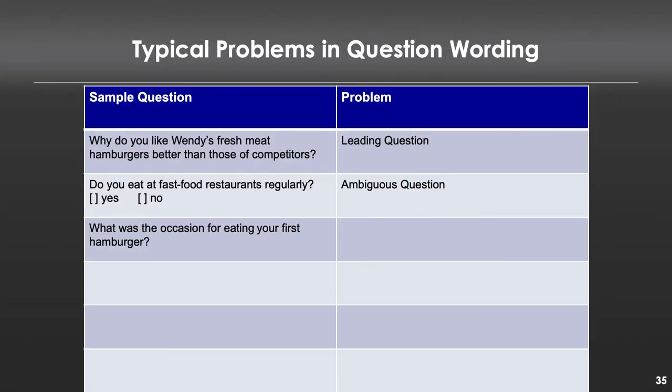How about this one: 'What is the occasion for eating your first hamburger?' This is an unanswerable question — who remembers the first time they ate a hamburger? No one does. If anything, they'll give you a guess, and a guess is not useful. Beyond that, who cares? Why does it matter when somebody ate their first hamburger? It's also possible they never had a hamburger, so how do they answer it? Make sure that the question has a specific answer that is reasonably accessible to people.